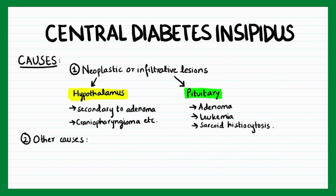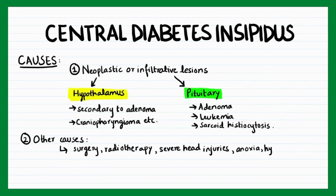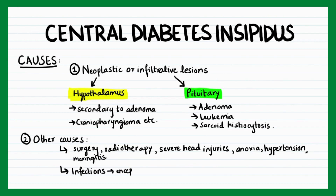Other causes of central diabetes insipidus include surgery, radiotherapy, severe head injuries, anoxia, hypertension, and meningitis. It could also occur due to infections such as encephalitis, tuberculosis, or syphilis. Additionally, it could be idiopathic diabetes insipidus, which usually starts in childhood.